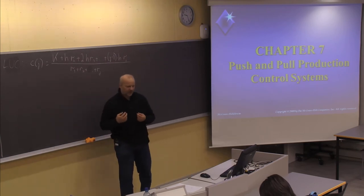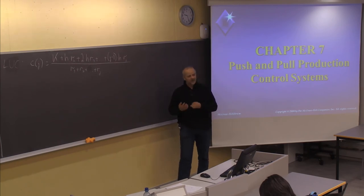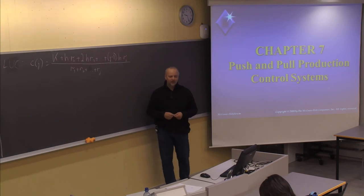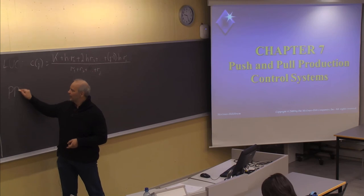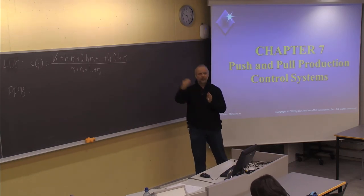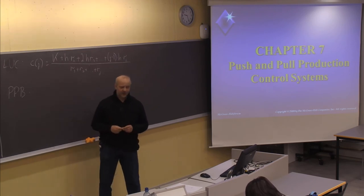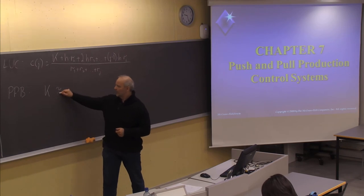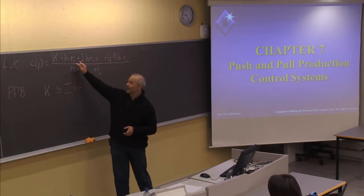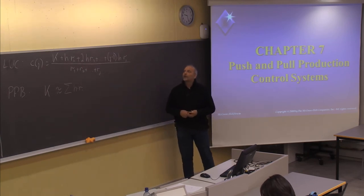Neither of these heuristics is universally best — Silver Meal can give a good solution in some situations, while Least Unit Cost works better in others. We also looked at a third heuristic, Part Period Balancing, which tries to find the holding cost for a number of periods ahead and chooses the number of periods to produce for where the holding cost is as close as possible to the setup cost K. So K should be as close as possible to the sum of the holding costs multiplied by R, accounting for how many periods items are stored.